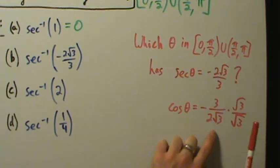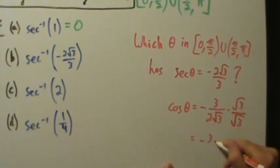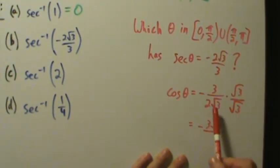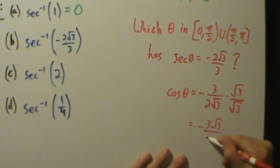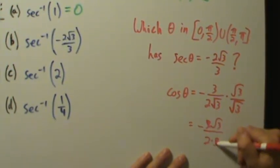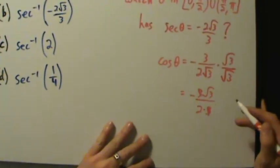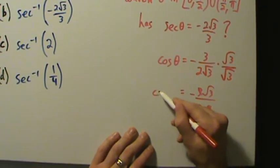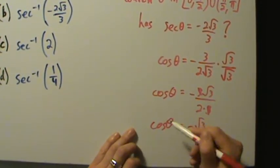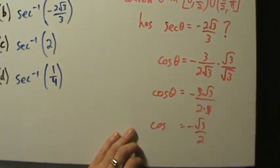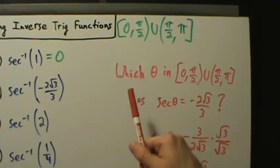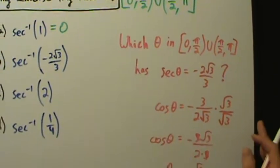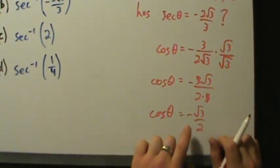Multiplying top and bottom by √3 gives us negative 3√3 in the numerator, and 2√3 times √3 in the denominator — √3 times √3 is 3, so the denominator is 2 times 3. The 3s cancel, and we end up with cosine of theta equals negative √3 over 2.